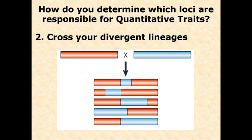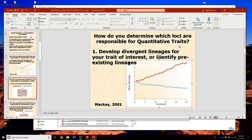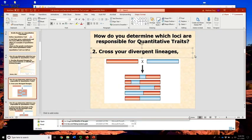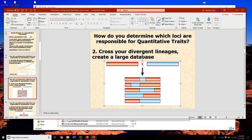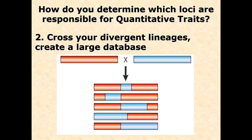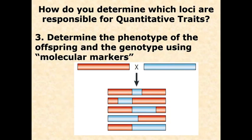Then we determine the phenotype of the offspring and the genotype using molecular markers. We look at each individual, which is a mix of its two parents, and examine what genetic markers it has. These markers help us identify which parts of the chromosome came from parent A and which from parent B. We can do this by sequencing entire genomes and looking for particular markers.